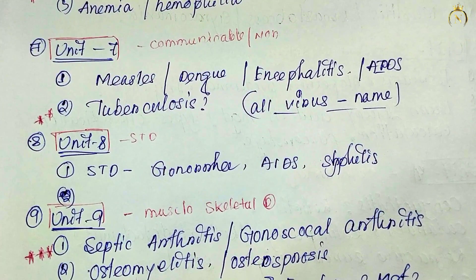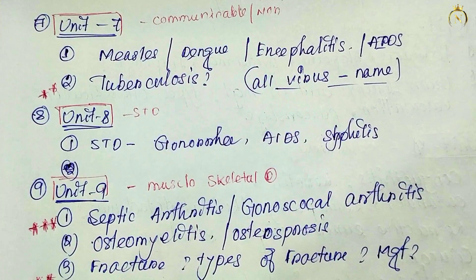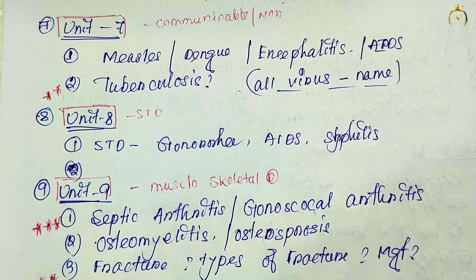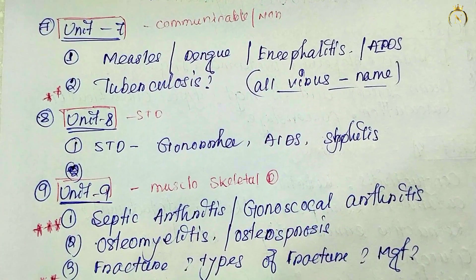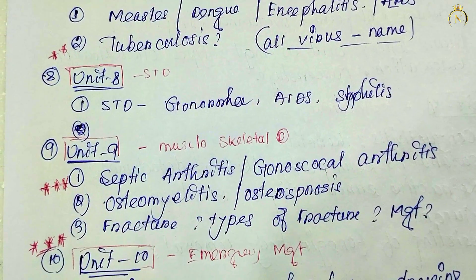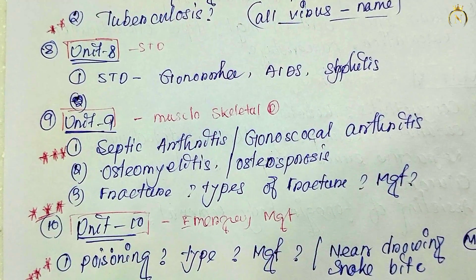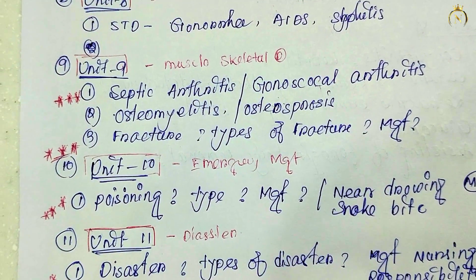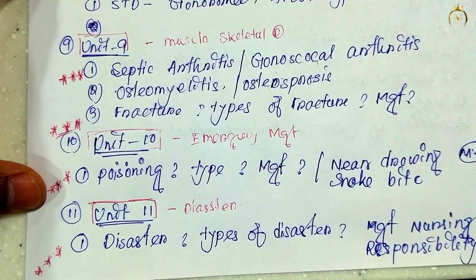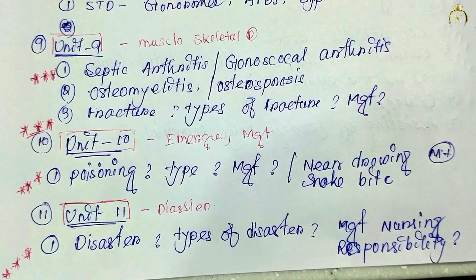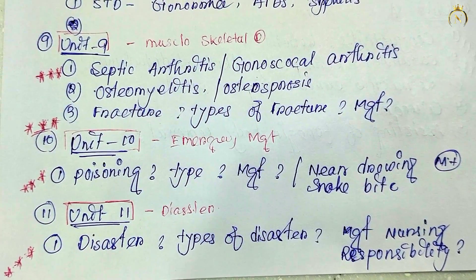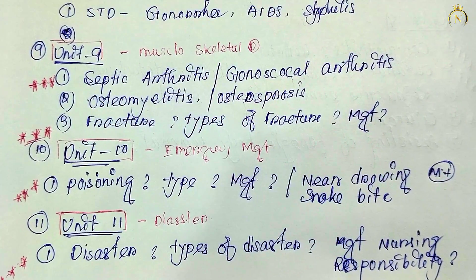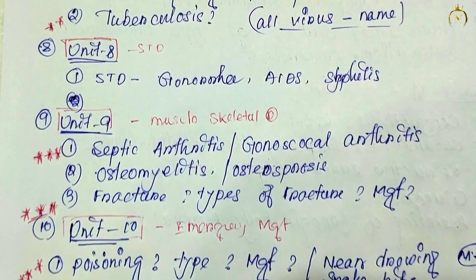For communicable diseases, that unit is not very important — just study the virus names: measles, dengue, and similar. Unit 8, sexually transmitted diseases — only gonorrhea and syphilis are important; just study the causative agents, no need for detailed study. Unit 9, musculoskeletal system, is a little important — septic arthritis, gonococcal arthritis, osteomyelitis, osteoporosis, and fractures including types and management of fractures are the most important.